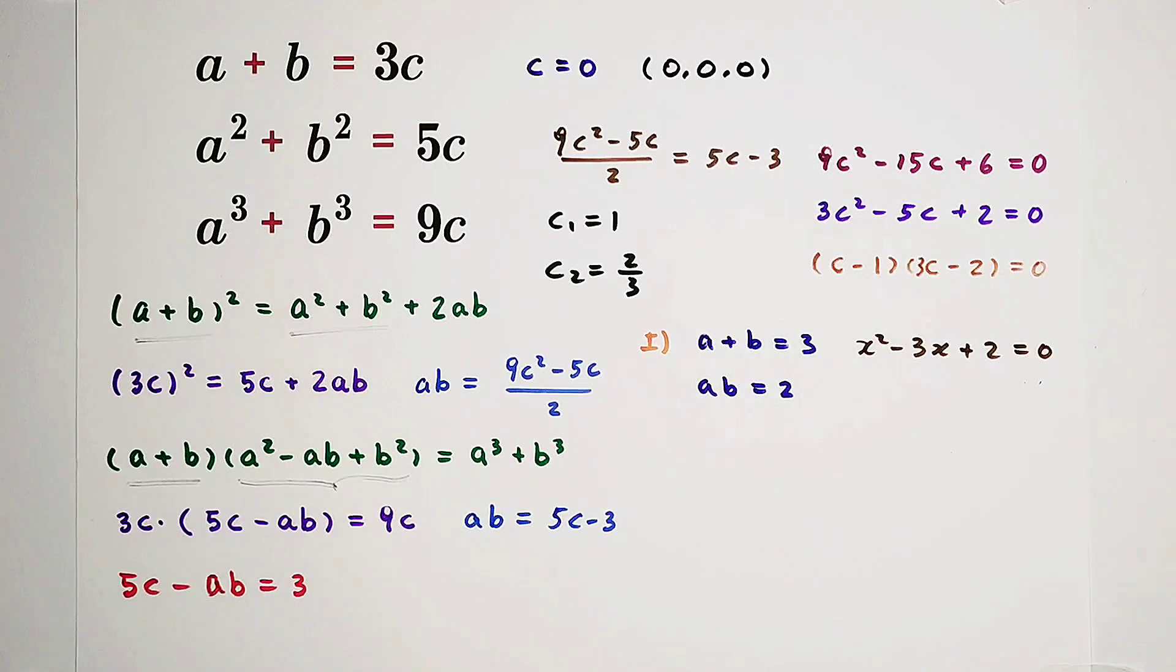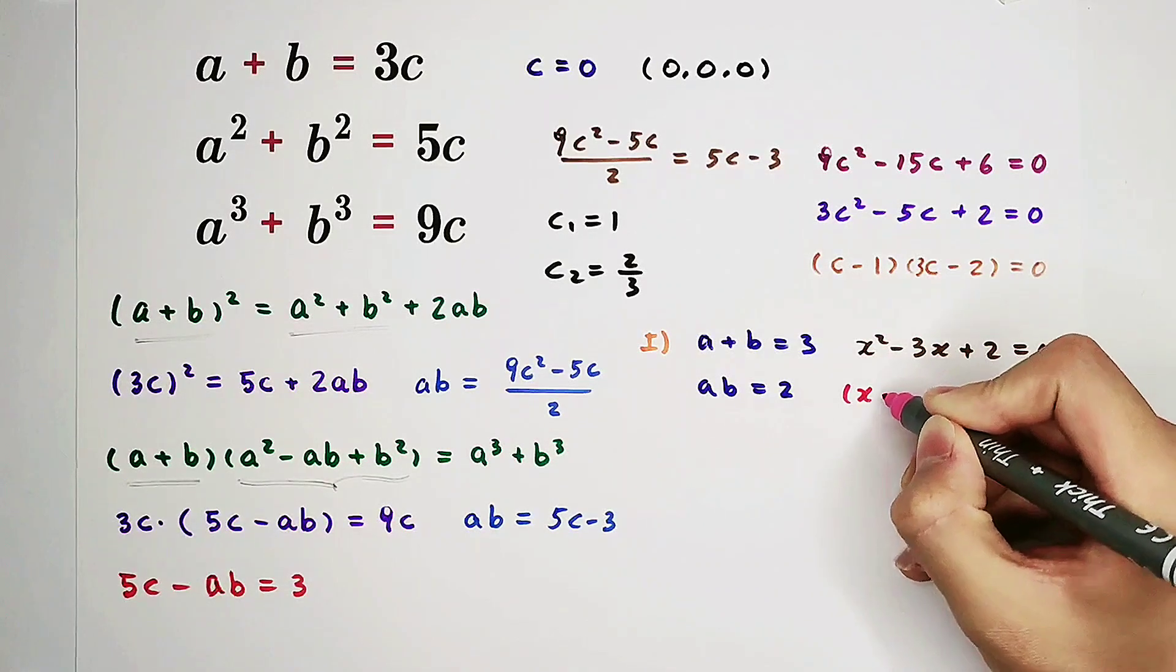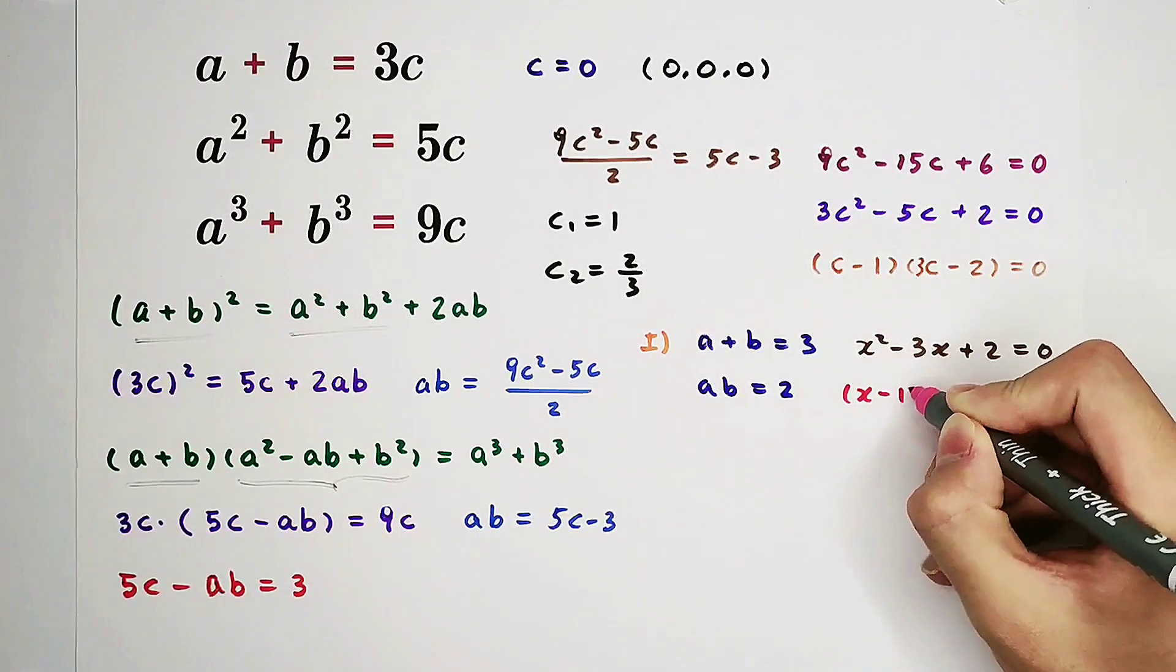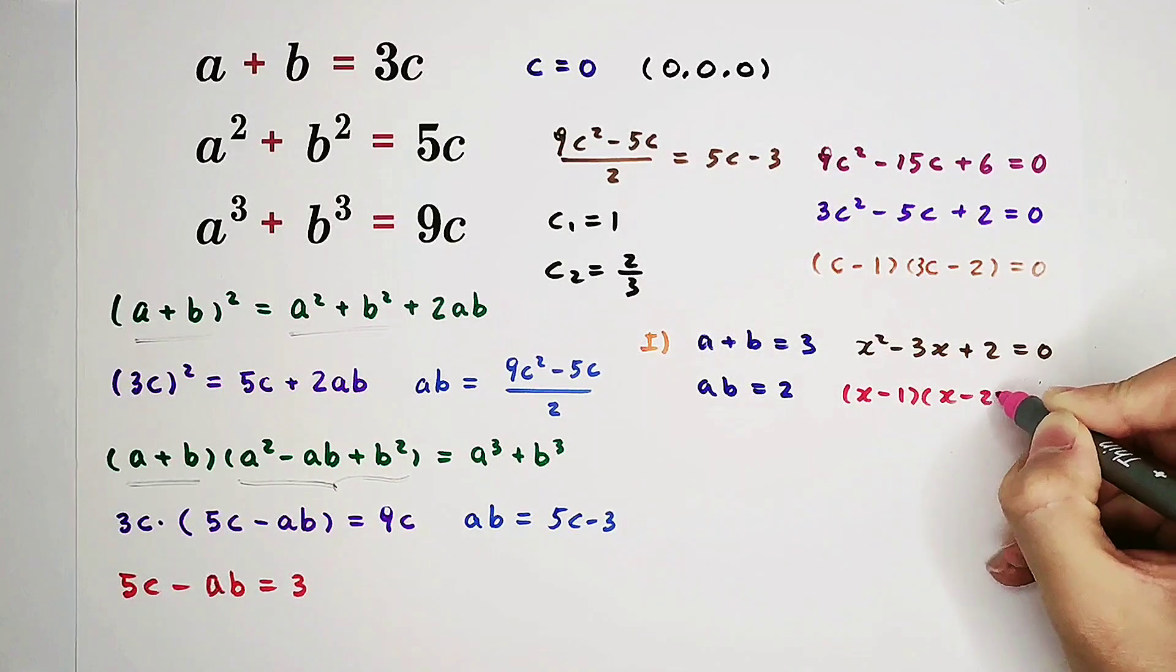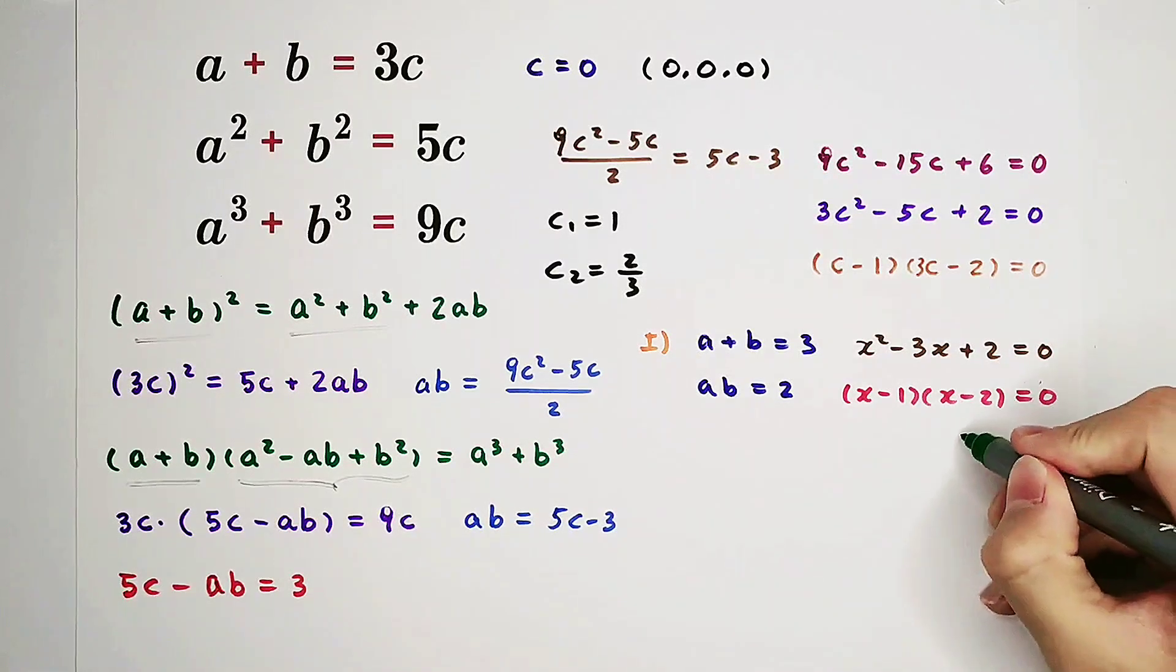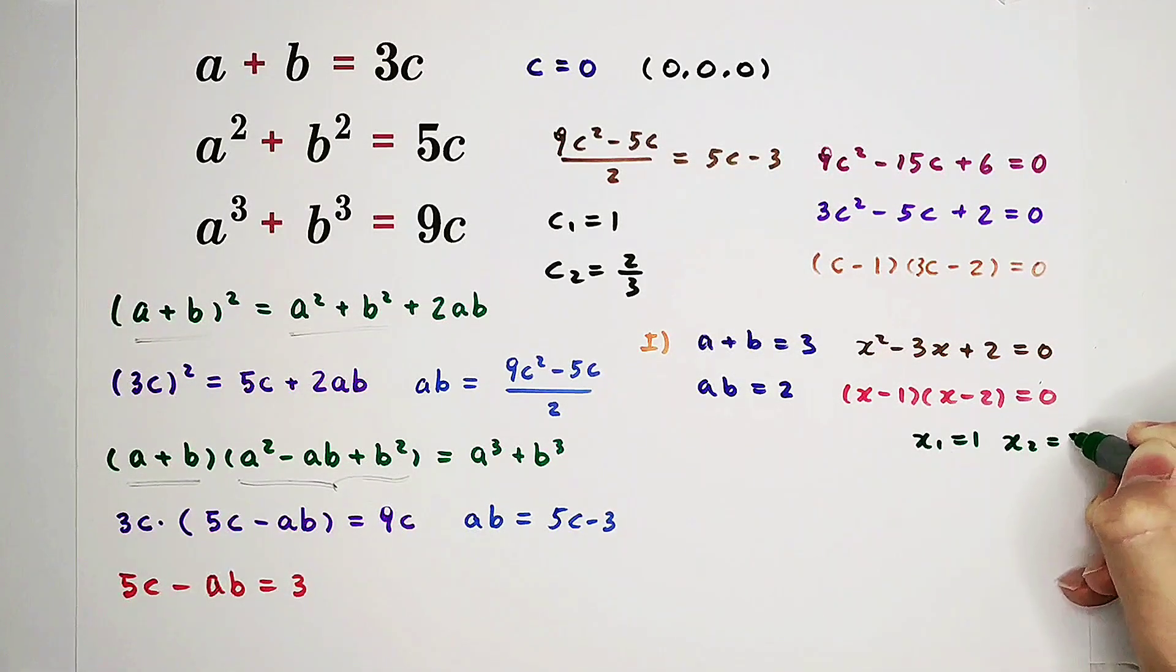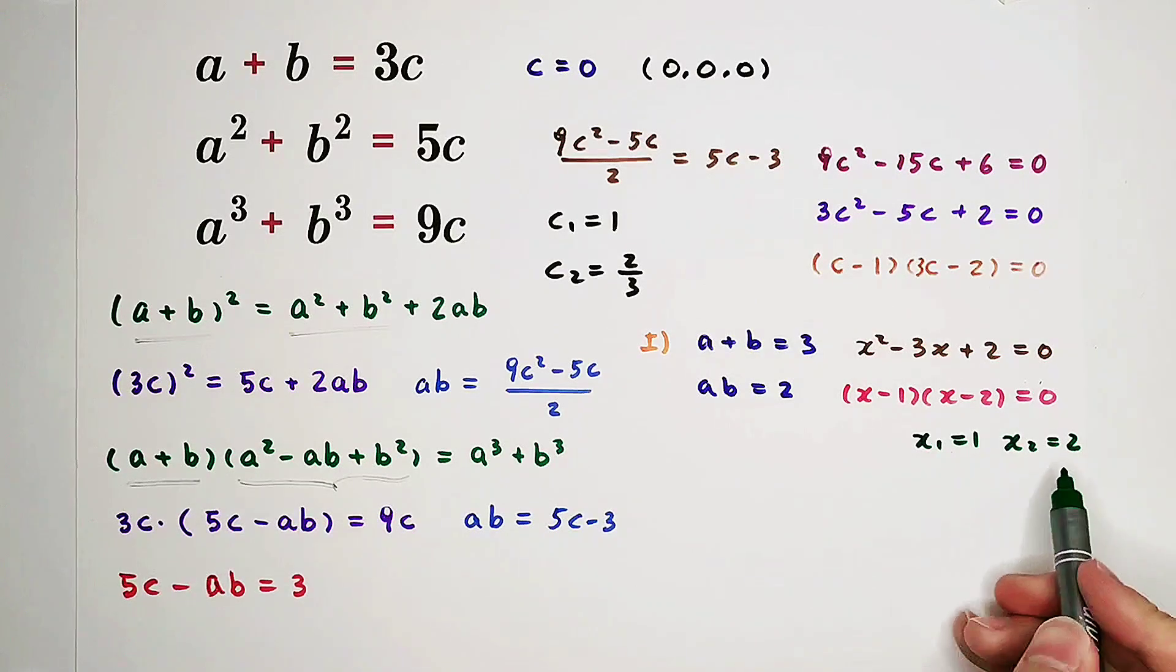x squared minus 3x plus 2 equals 0. Fortunately, the left side can also be factorized. It is x minus 1 times x minus 2 equals 0. So x equals 1 or x equals 2. So that means x1 is 1, x2 is 2.